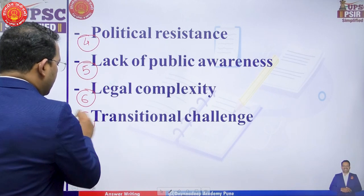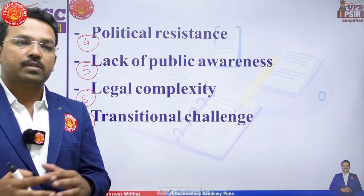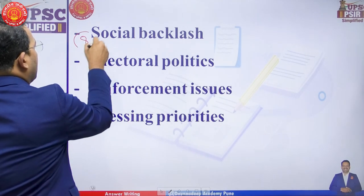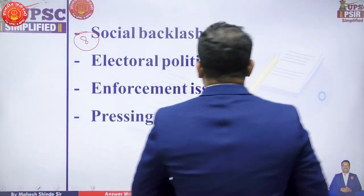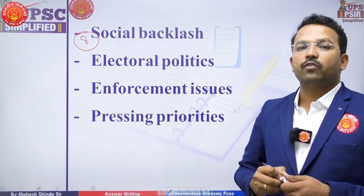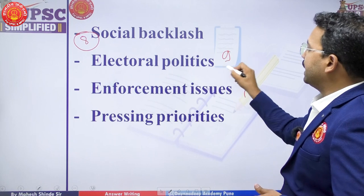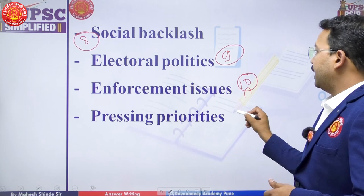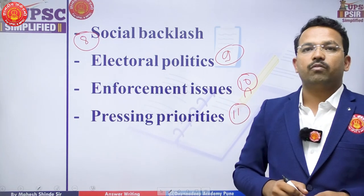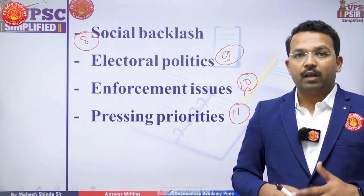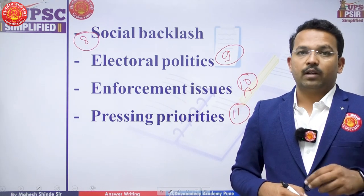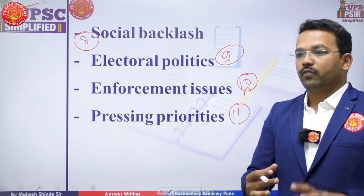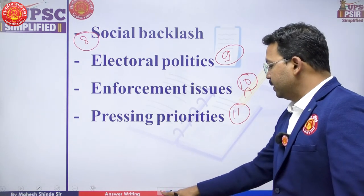The seventh difficulty is the transitional challenge — shifting from the current status to a Uniform Civil Code will be a great challenge. The eighth is social backlash, as not everyone will be happy with the UCC. The ninth is electoral politics. The tenth is enforcement or implementation issues. The eleventh is pressing priorities — whether UCC is the first priority or whether other priorities should be addressed first.